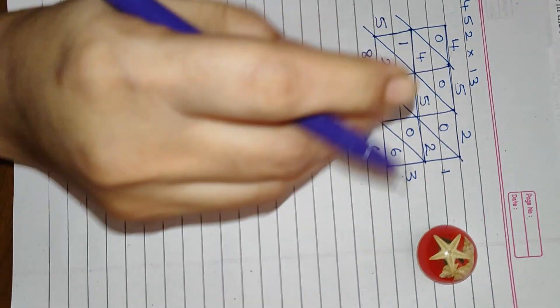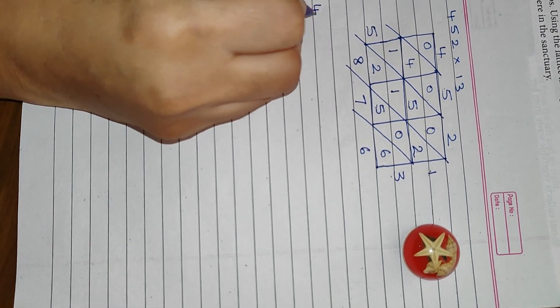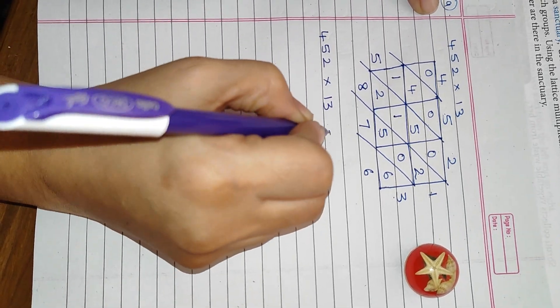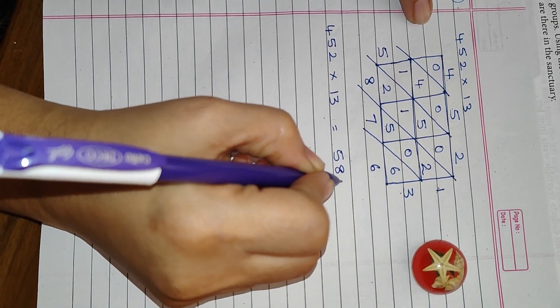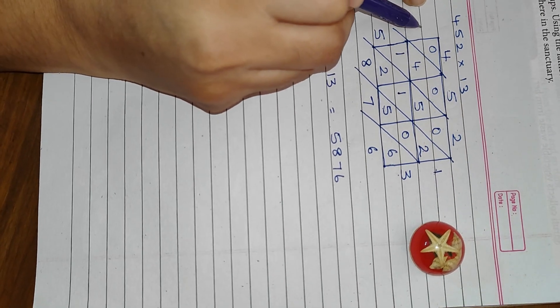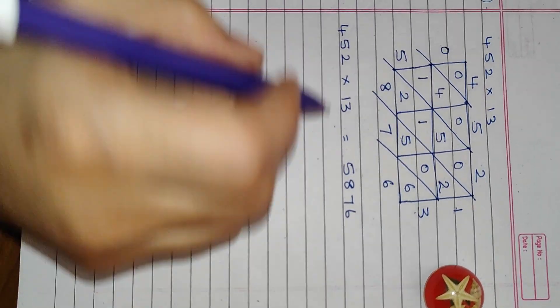Now 0 you ignore. 4 plus 1 is 5. 5. So our lattice multiplication is done. So 452 multiplied by 13 equals 5876. This is the answer. Here you can just write, put 0. That is what my daughter is saying.